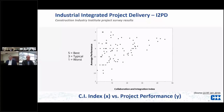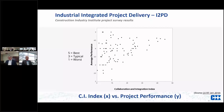The CI index essentially measures how many of the collaboration and integration tools you used and at what level of intensity. It's an interesting graph — we all looked at it and they asked, 'Do you notice anything?' We had what was called our 'aha moment.' We looked at it and said, 'Wow, the bottom right-hand corner is empty.'